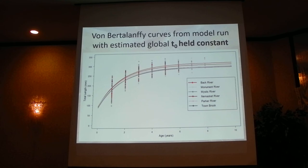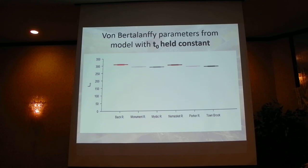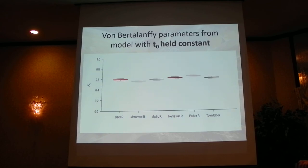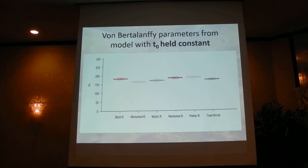When we hold t0 constant, the resulting growth curves all start from the same point at age zero, allowing a more meaningful comparison of growth. Looking at L-infinity again, the Back River falls out on top, followed by the Masket, with the Parker now falling more mid-pack. Crucially, when we look at K values, there's much less variability across all six rivers — the K values are very similar. This means the river with the higher L-infinity will have the higher omega, which is exactly what we see: the Back River on top followed by the Masket and Parker.